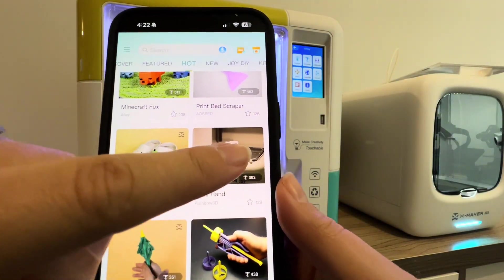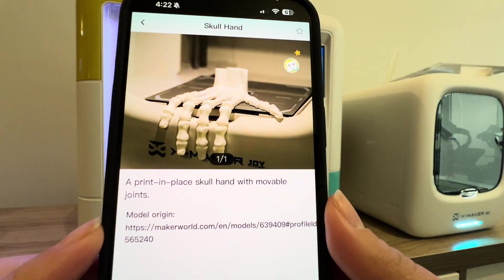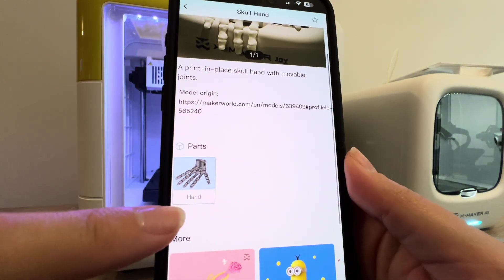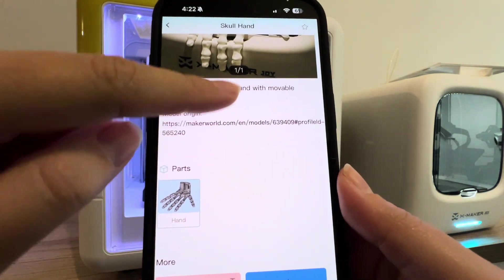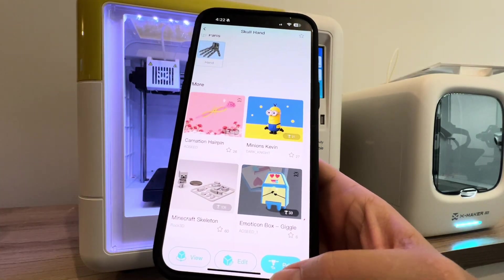Of course, we're going to go with that cool skull hand. It's got 129 stars, which means that other people have done this print and it's been successful. You can see the different parts and you can go down to the bottom here and click print.